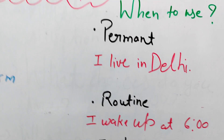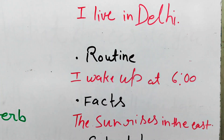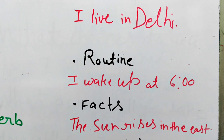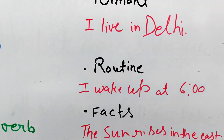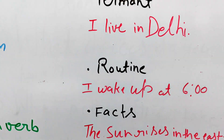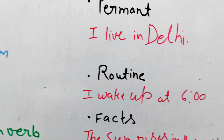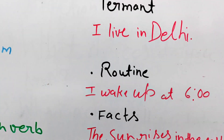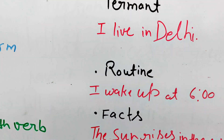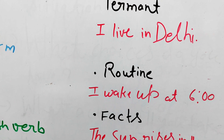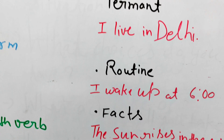So the second use is routines — permanent situations like daily habits. For example: I wake up at 6 AM, or I go to sleep at 11, 12, or 10.